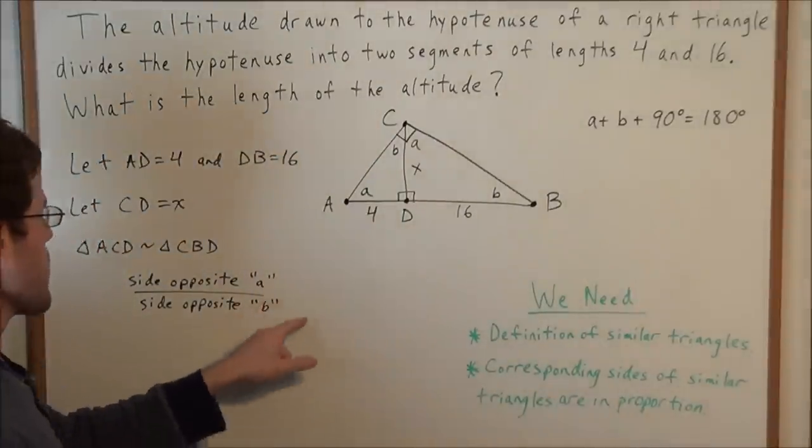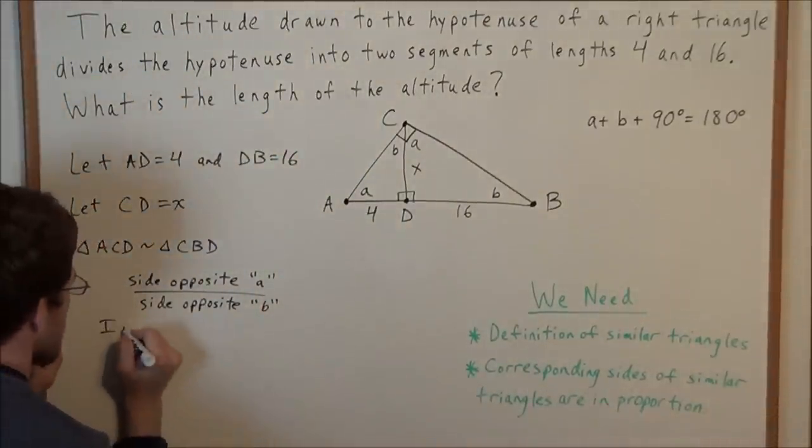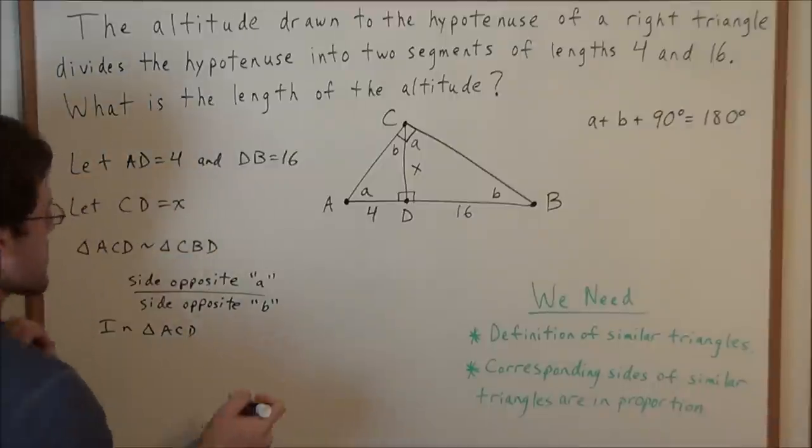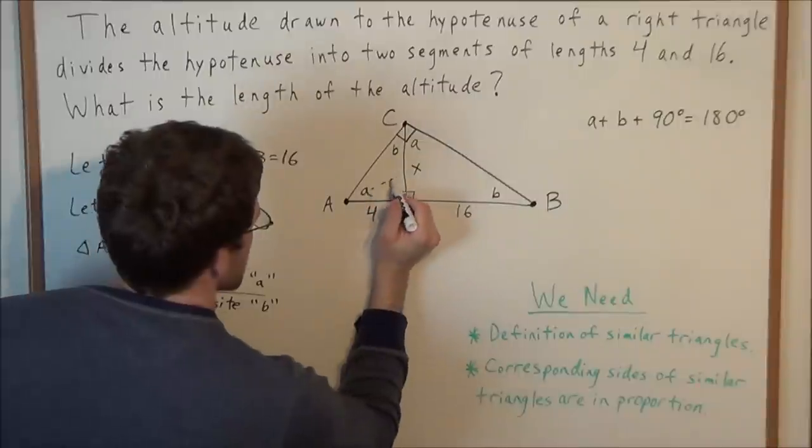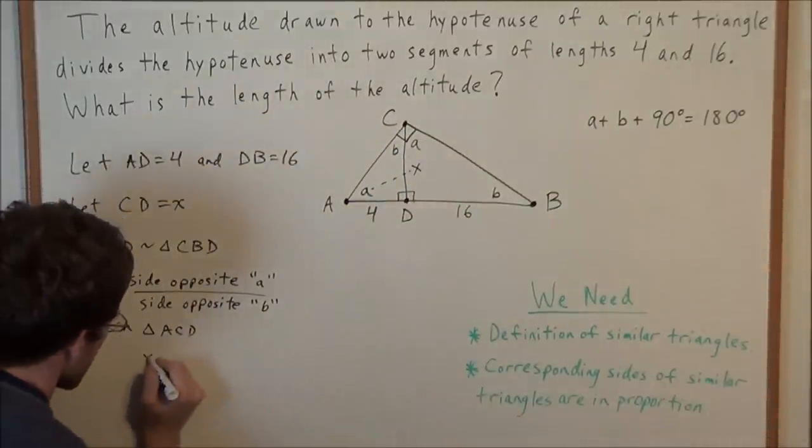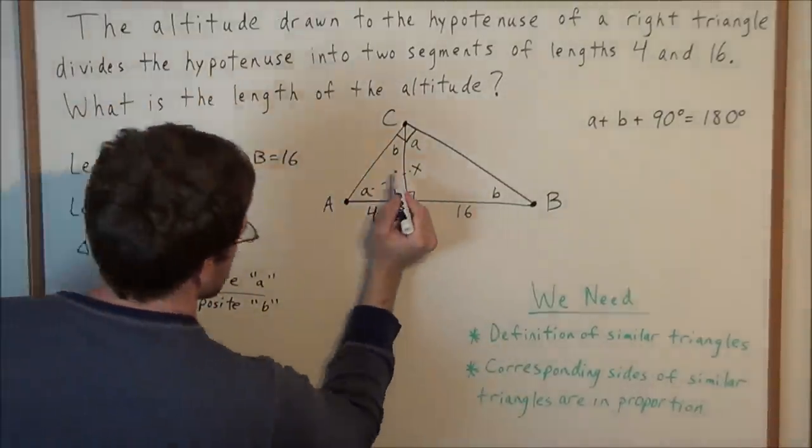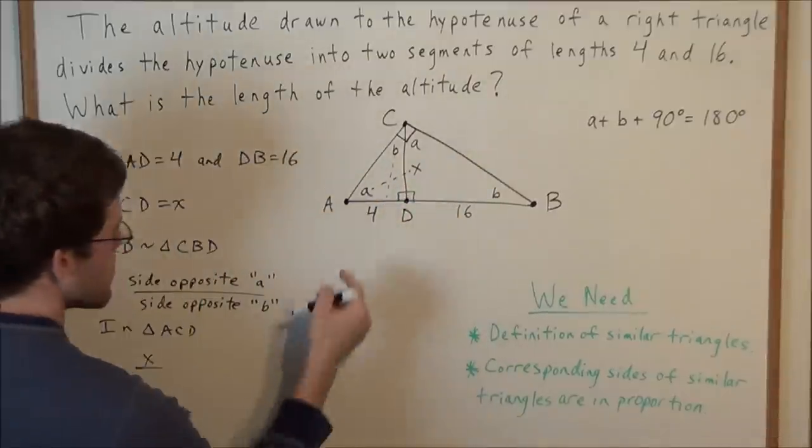So if we look at this ratio in triangle ACD, the side opposite a would be x, and the side opposite b would be 4.